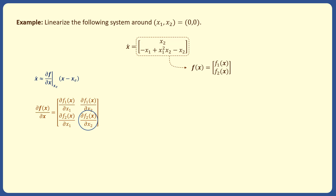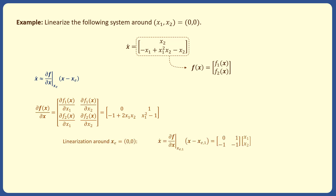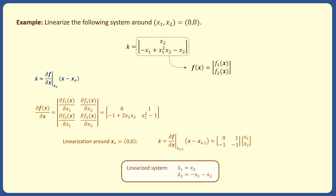We can calculate all the derivatives and obtain the Jacobian matrix. Then we evaluate this matrix at the origin by substituting x1 equals 0 and x2 equals 0. So the linearized system is in this form, which can also be written as two equations: x1 dot equals x2, and x2 dot equals minus x1 minus x2.